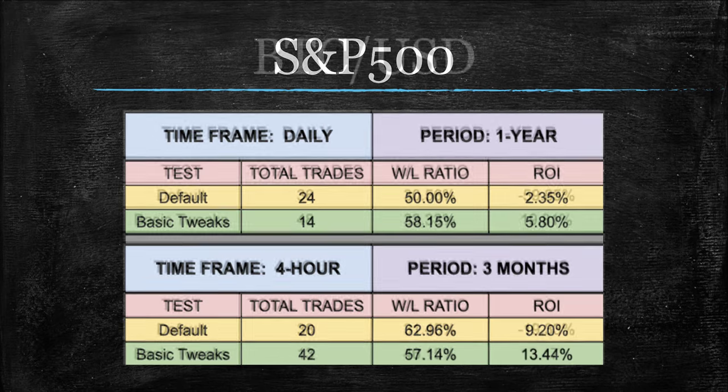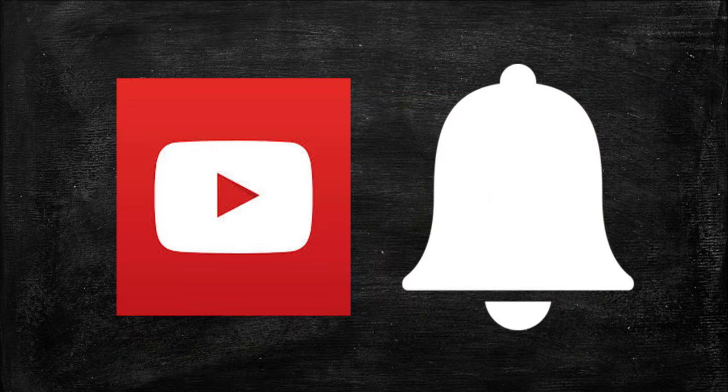Finishing it off with Bitcoin — strong, kind of like gold. We've certainly seen much stronger here. Low win-loss ratios on this one, which kind of surprises me, but strong ROI on the daily.